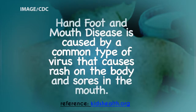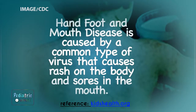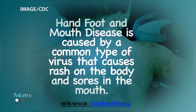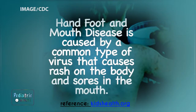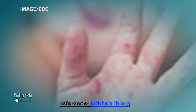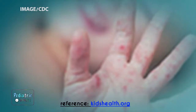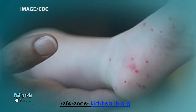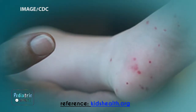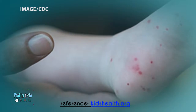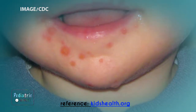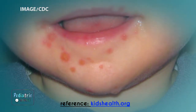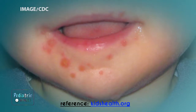Hand, foot, and mouth disease is caused by a common type of virus that causes a rash on the body and sores in the mouth. Just like the name implies, the classic areas where the rash appears are on the hands and feet, particularly the palms and soles. Other common areas include around the mouth, buttocks, and sometimes the arms and legs as well. The rash varies in appearance but often looks like little red spots or fluid-filled blisters.